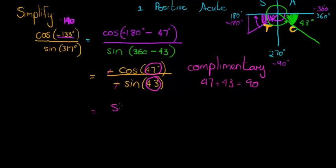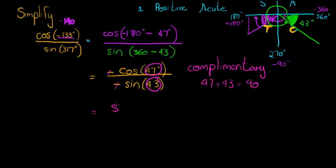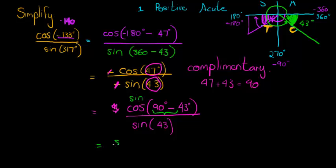So, we can write one of them as the co-ratio of the other one. Cos of 47 is the same as saying cos of 90 minus 43 divided by cos of 43. Now here you notice, the negatives cancel, so they have no influence anymore. But here we notice that cos of 90 minus, 90 minus is an angle made with the y-axis. We want angles with the x-axis, and to do that, we use the co-ratio for cos is sine. So, we get sine of 43 degrees over sine of 43 degrees. What's that going to yield? It's going to give us one.